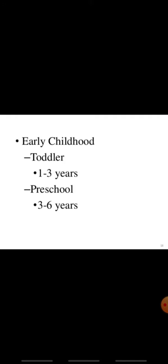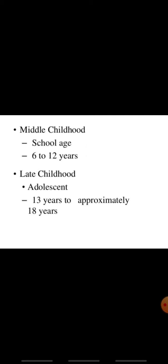Childhood (3 to 12 years): The childhood stage begins from the third year and lasts till the end of the 12th year. At this stage, the children are able to have enough control on their muscles. Thank you.